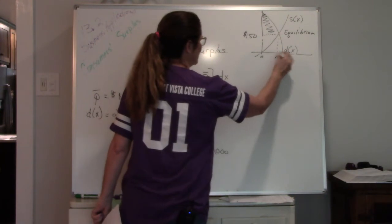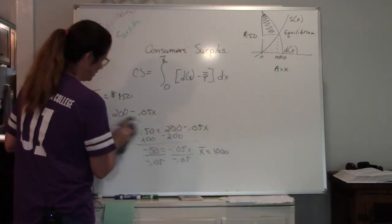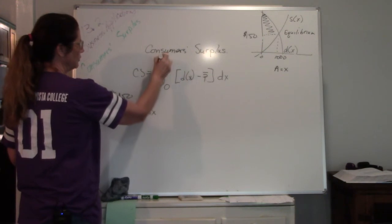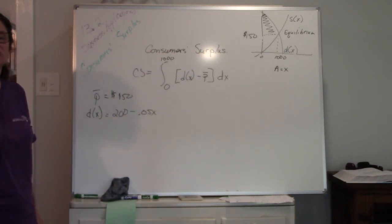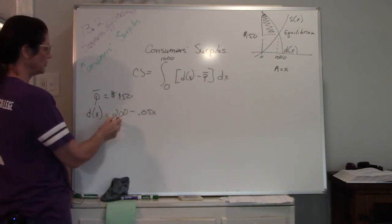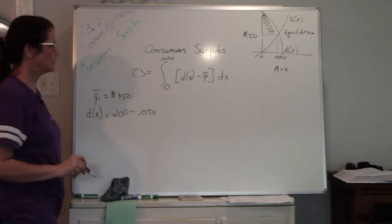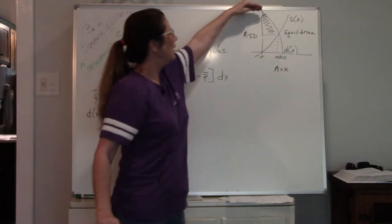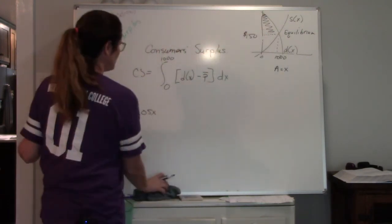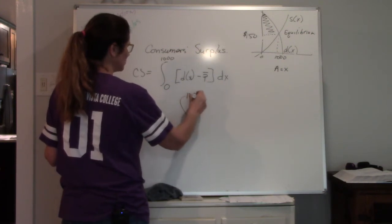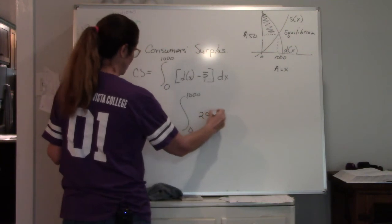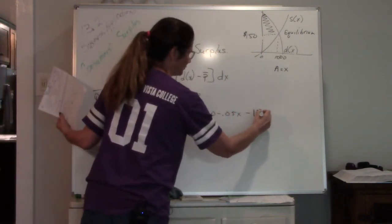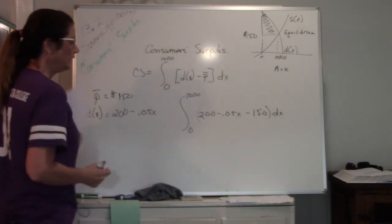Now we know our integral goes from 0 to 1000. You won't be given that value — you have to find it by plugging 150 into the demand function and solving for X. Now we set up consumer surplus: we take our demand function minus the lower function. So consumer surplus equals the integral from 0 to 1000 of (200 minus 0.05X) minus 150, all DX.